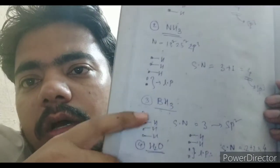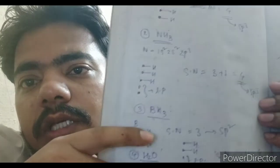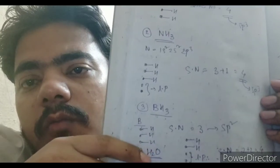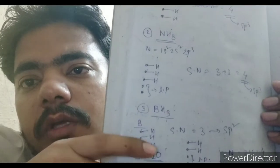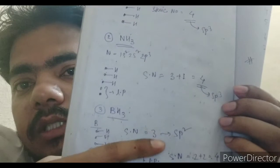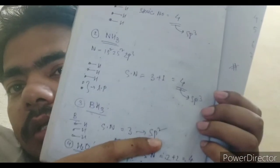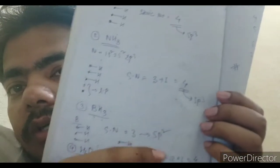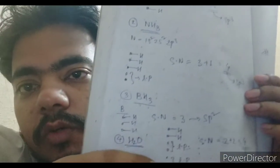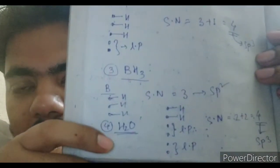For BH3, boron has three valence electrons and they make one bond each with hydrogen. The steric number is three, and the hybridization is sp2.